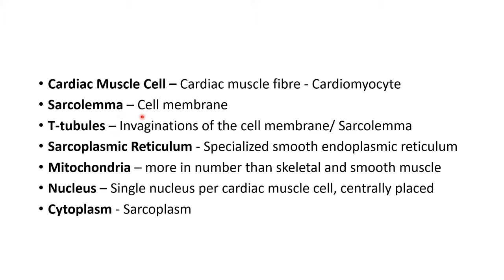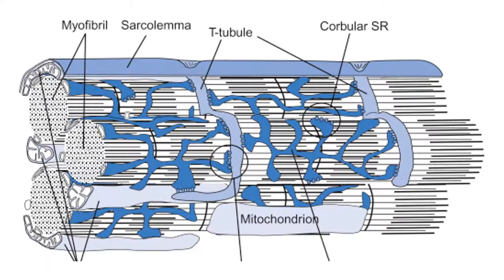There are certain invaginations of the cell membrane into the cell called T-tubules. In this picture, you can see a single cardiac muscle cell. The membrane of the cell is known as the sarcolemma, and the membrane is invaginated into the cell in the shape of the letter T. This invagination of the cell membrane into the cell is known as the T-tubule.